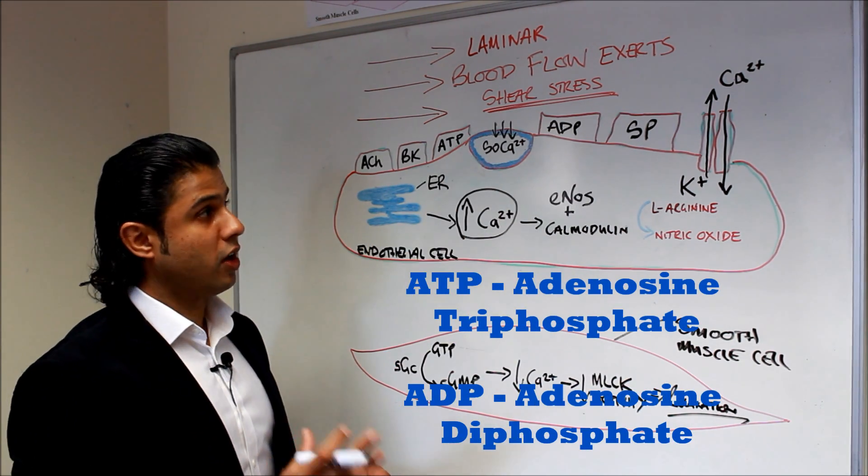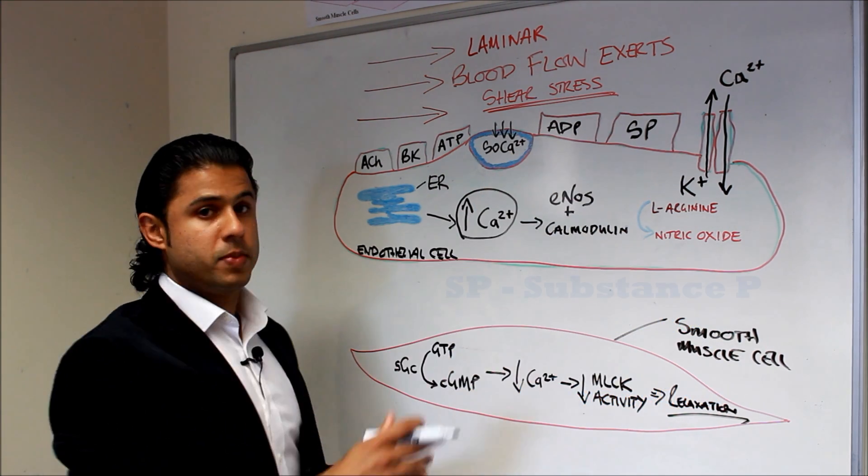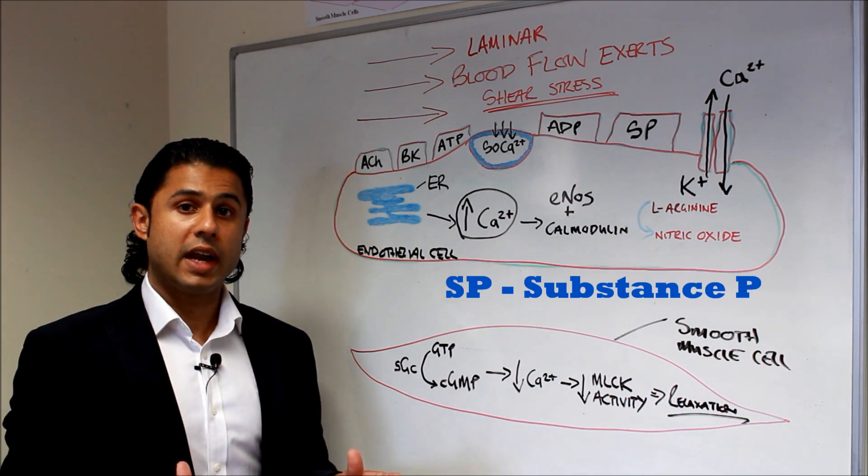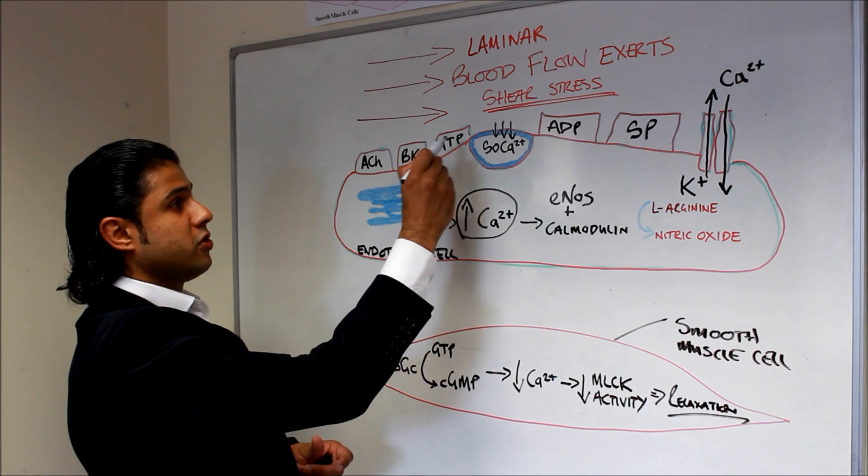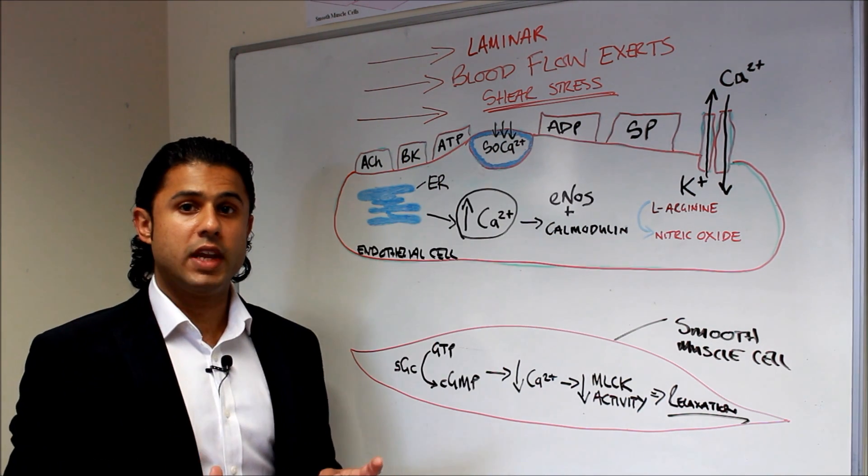ADP, adenosine diphosphate, and substance P, and there are many other nitric agonists which have specific receptors located on the surface of the endothelial cell.